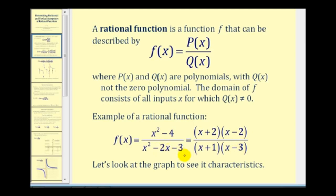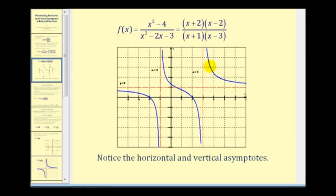Let's take a look at the graph of this function. This graph has two vertical asymptotes: at x equals negative one and x equals three. Vertical asymptotes are lines that the graph approaches but never touches. This graph also has a horizontal asymptote of y equals one, and a horizontal asymptote is a line that a graph approaches, but it may also cross it as we see here.